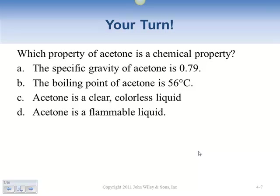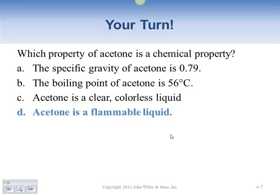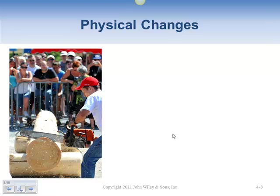Which property of acetone is a chemical property? Chemical properties change the nature of the thing. Acetone is flammable — if you put it to the flame and light it, it's no longer acetone. It flames up and turns into something else, combining with oxygen to create a different substance. The other options — specific gravity, boiling point — don't change the nature of the acetone, so those are physical properties.